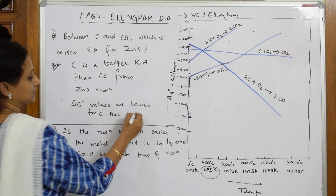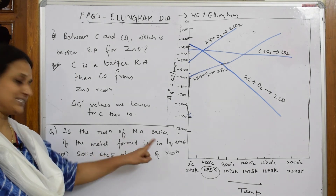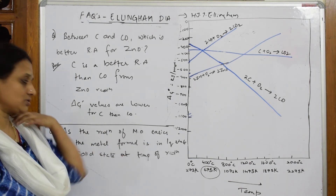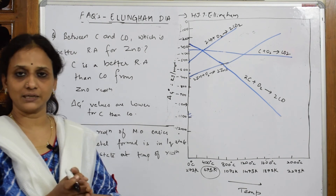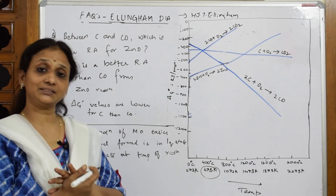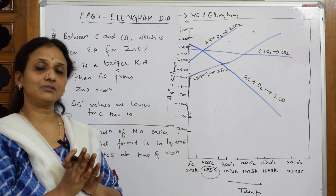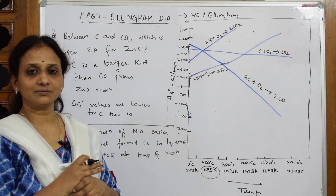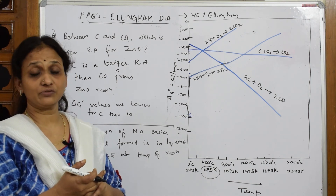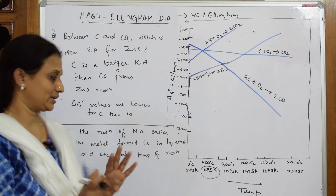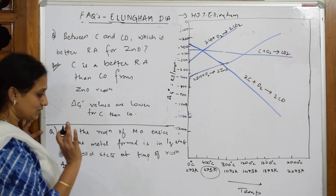Is the reduction of a metal oxide easier if the metal formed is in liquid state or solid state? In metallurgy, we convert metal oxide to metal. If the metal is in liquid state, kinetic energy is high, meaning temperature is higher. Let us speak in terms of delta G to justify whether liquid or solid state is more feasible.